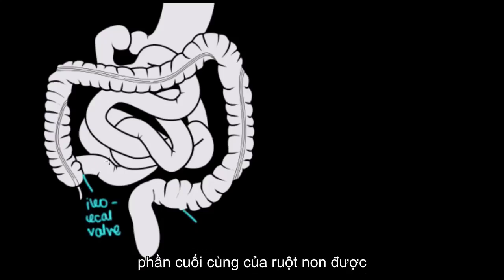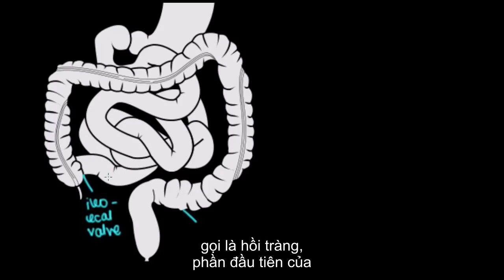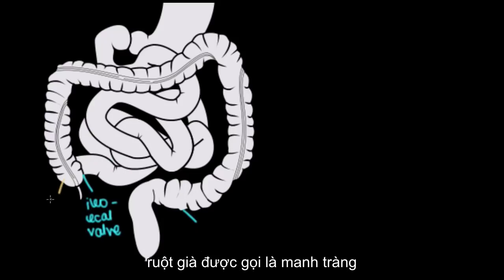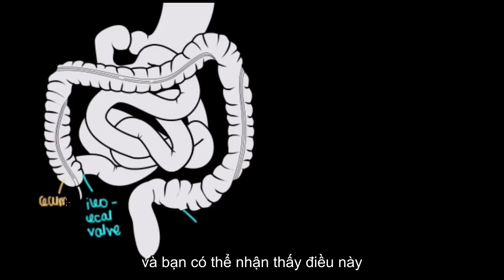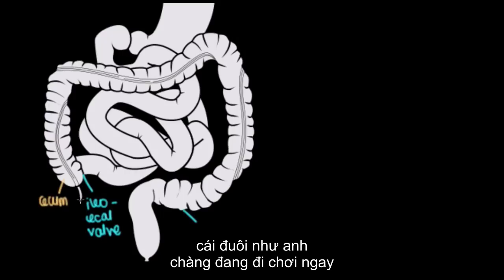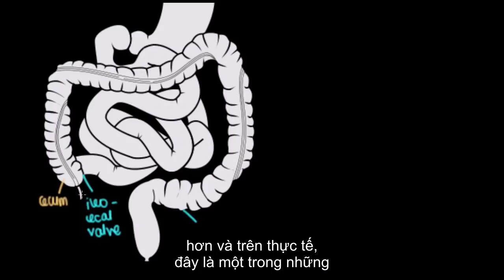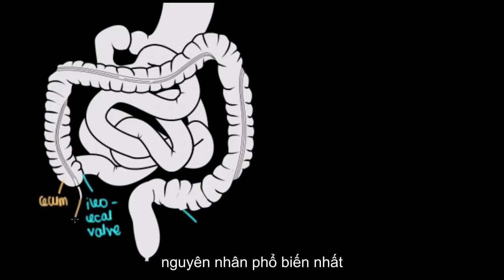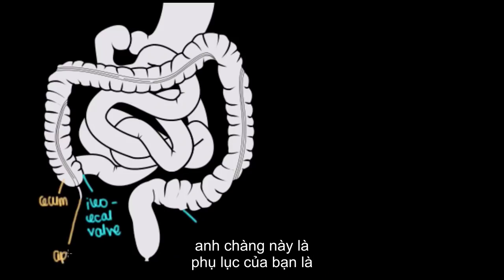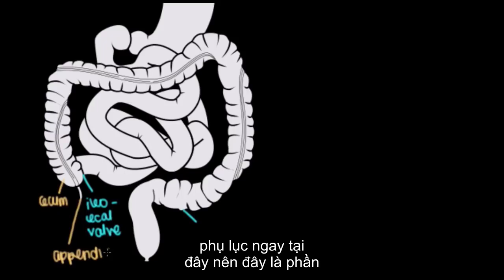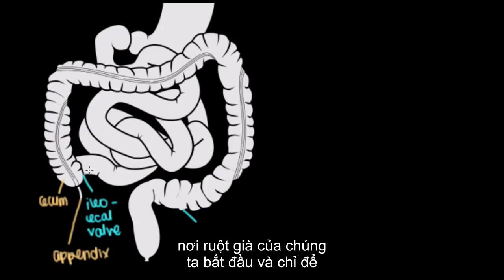This makes sense because the last part of the small intestine is called the ileum. The first part of our large intestine is called the cecum. And you can notice this little tail-like structure hanging right here — this doesn't look like it does much, it looks like some functionless structure. But in fact, this is one of the most common causes of surgery in the GI tract. This is your appendix.